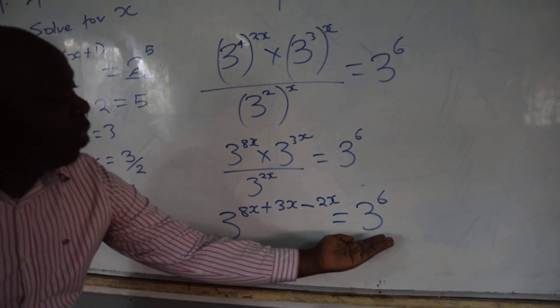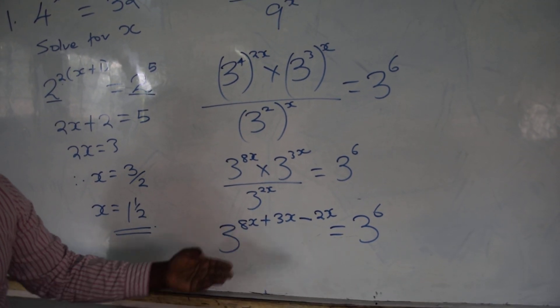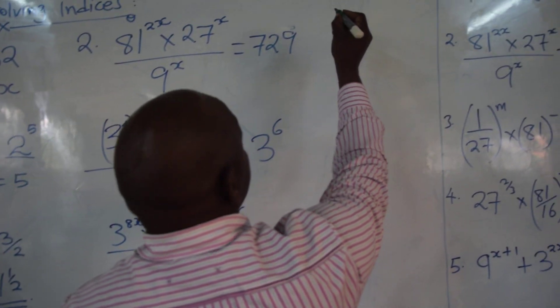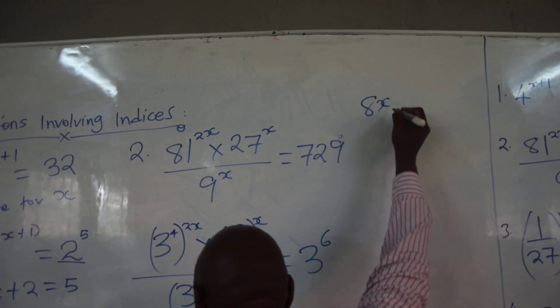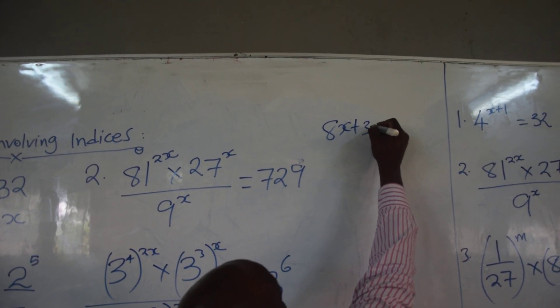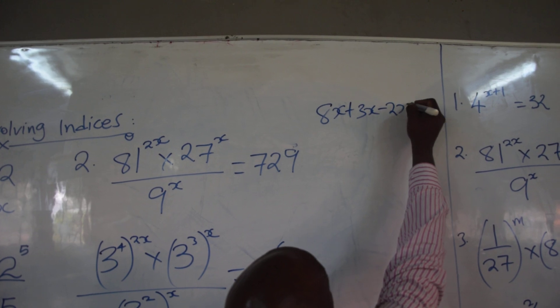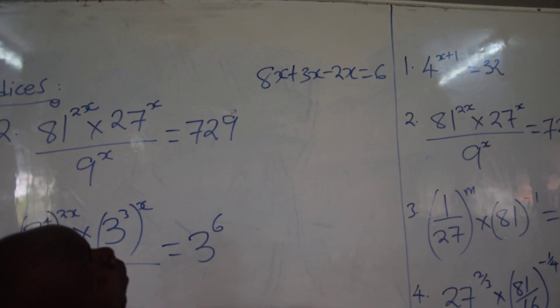Now, the base here is 3, and the base here is 3. You equate the powers to get 8x plus 3x minus 2x equals to 6.